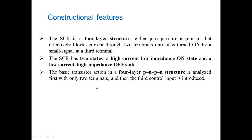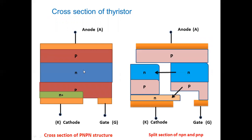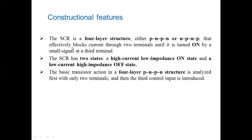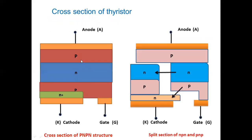The cross-section of the thyristor is shown here. It can be split into two sections: N-P-N and P-N-P. The cross-section shows a metal oxide layer and oxide layers. The complete P-N-P-N structure is split into two sections — N-P-N and P-N-P. The anode is given here, cathode here, and gate is also indicated.